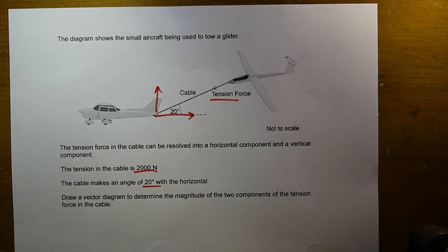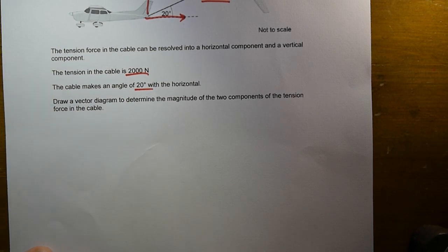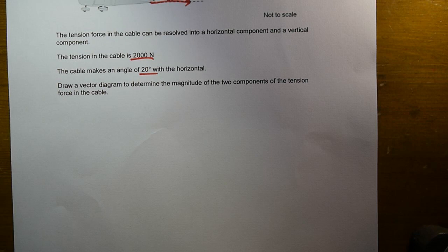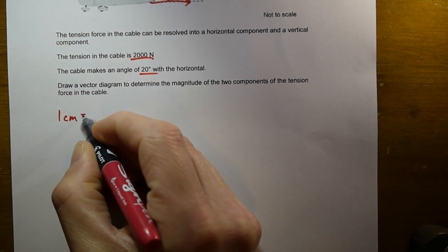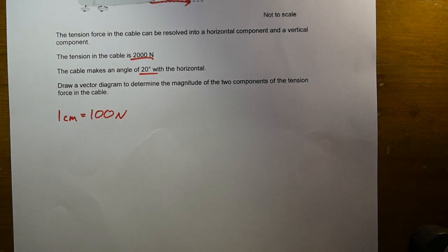So the most important thing to do when starting a question like this is to try and make sure we can use a suitably large scale. We've got a really large force here of 2000 newtons, so if we can get that to spread across the majority of the page, that would be really useful for us. So if we can pick a scale such as 1 centimetre equals 100 newtons, then we can get a line of 20 centimetres to represent our tension force, which should be large enough to get a good and accurate answer.